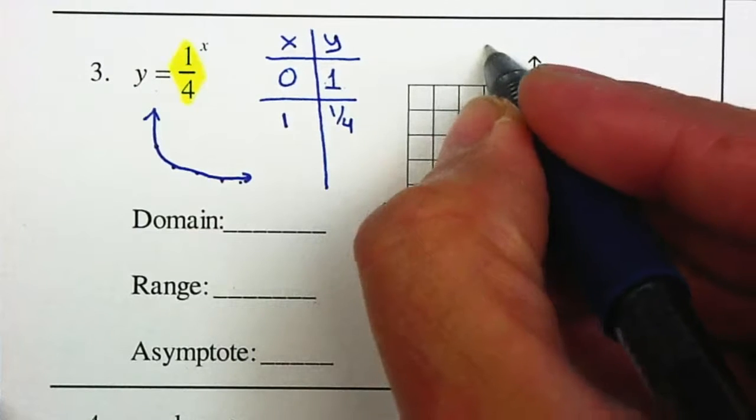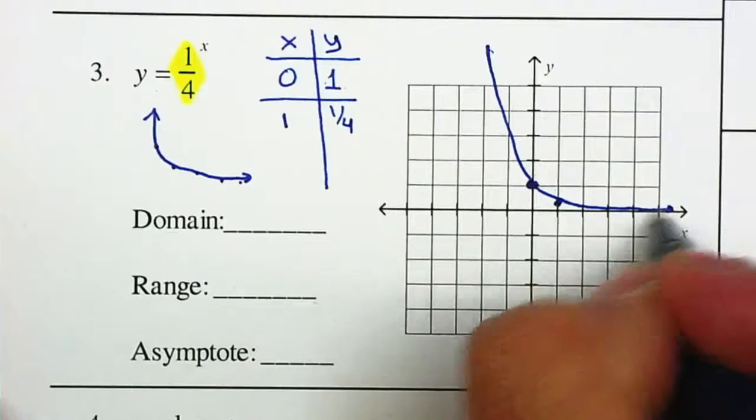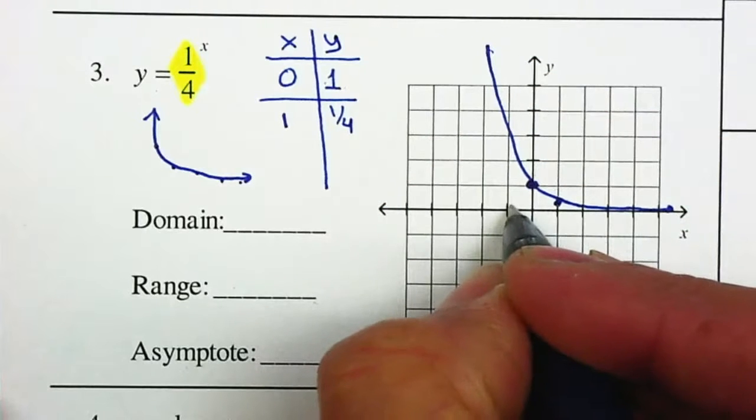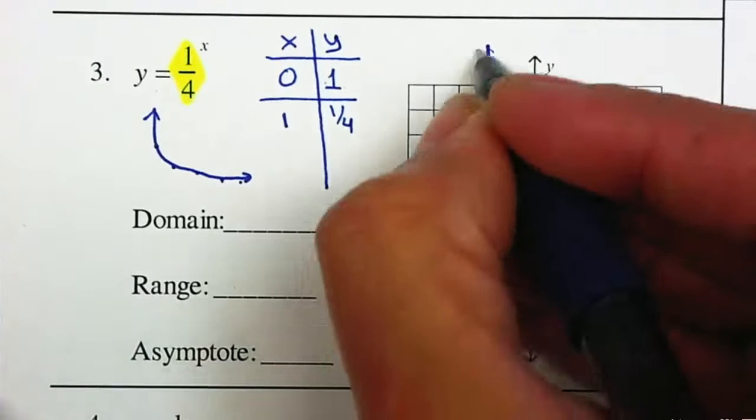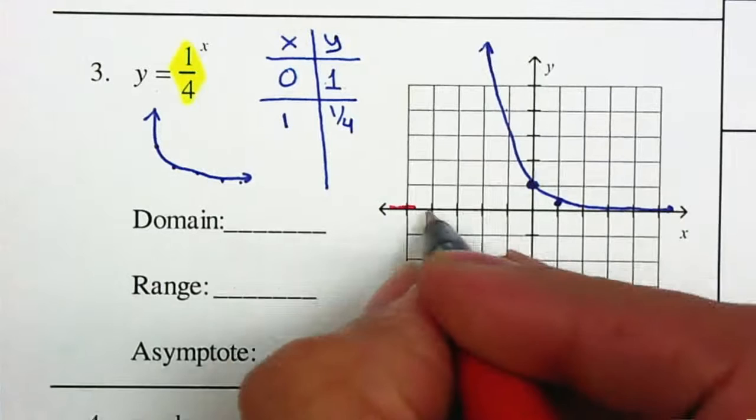And notice that this is going to be an exponential decay. You can plug in a negative if you want. It gives you a positive 4. But for now, we're just making a quick sketch. And this is my asymptote.